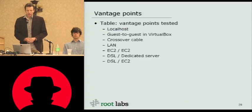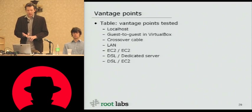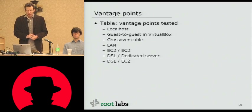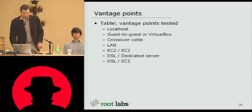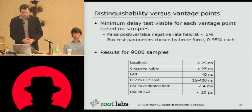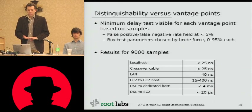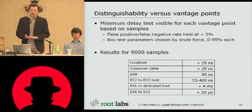We looked at a series of vantage points: localhost, guest-to-guest in a VM, crossover cable, LAN, two EC2 servers in the same region but not the same machine, from a regular DSL connection to a dedicated server, and from there to an EC2 server as well. Here are our results — these are the minimum delays that were visible for us for each vantage point, based on a certain number of samples. This will change based on how many samples you're able to take.